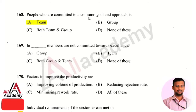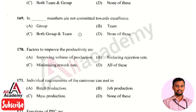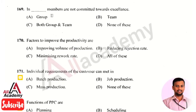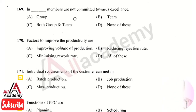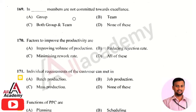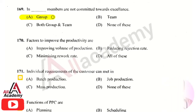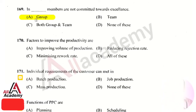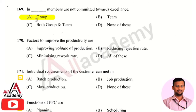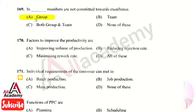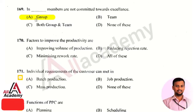The next question is: in which, members are not committed towards excellence? The right answer is option 1, that is a group. In a group, members are not committed towards excellence, because a group consists of a larger number of members who are not necessarily committed to achieving excellence.